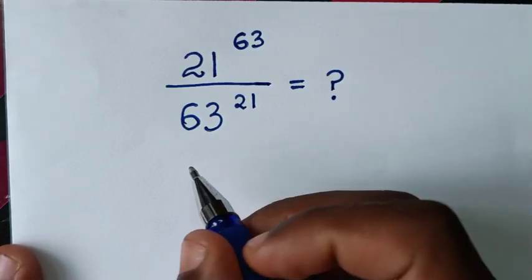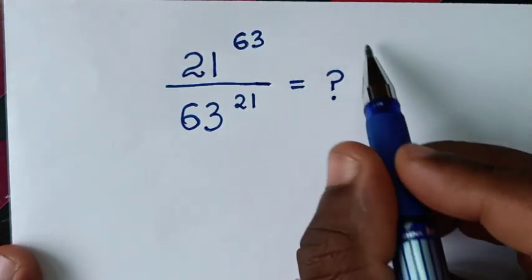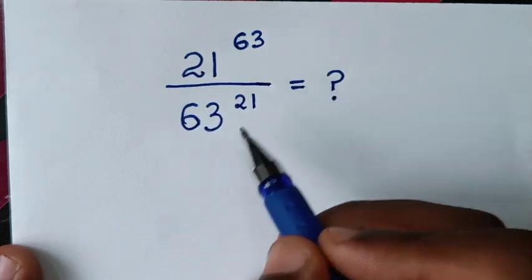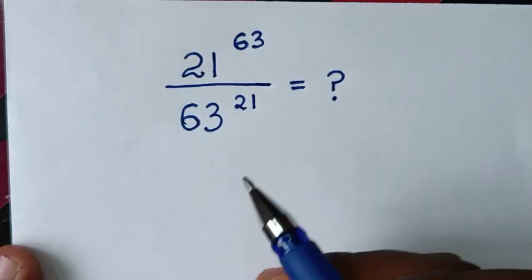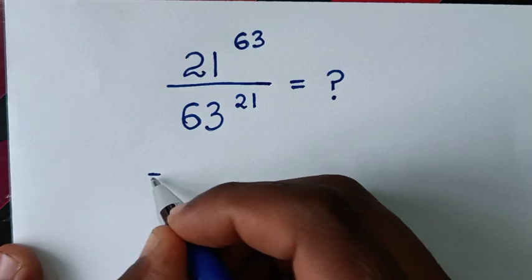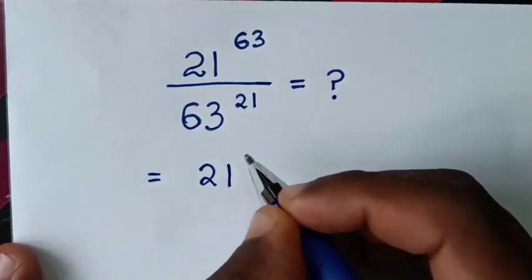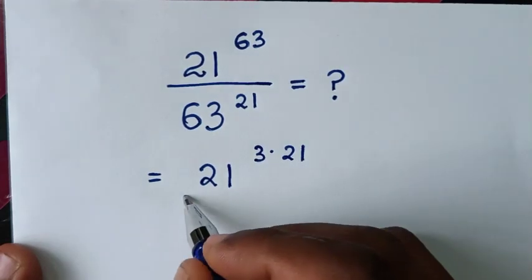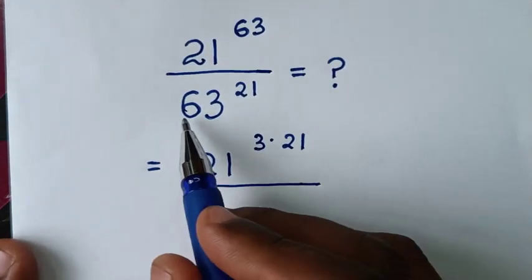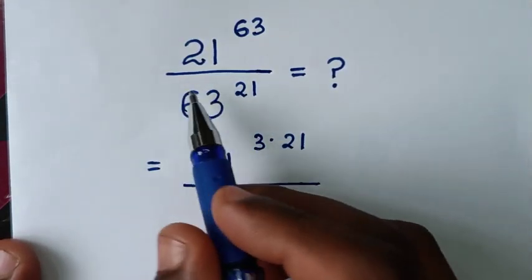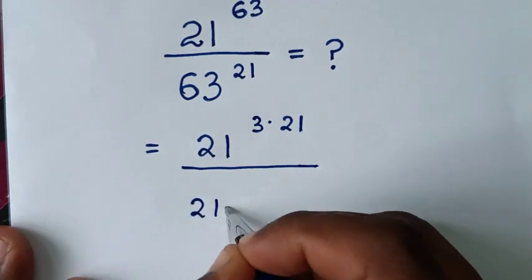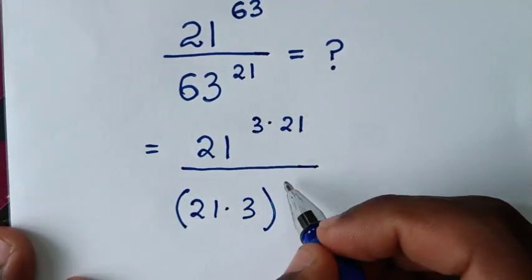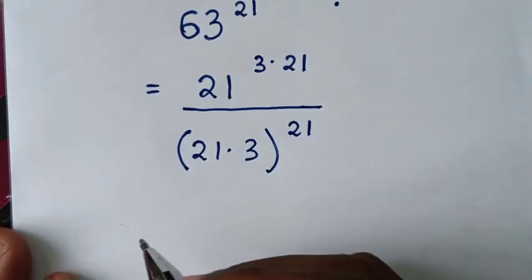Welcome. We will solve the math problem of 21 to the power of 63, over 63 to the power of 21. It will be equal to 21 power of 63 — where 63 is the same as 3 times 21 — over 63 power of 21, where 63 is the same as 21 times 3, with that bracket raised to the power of 21.